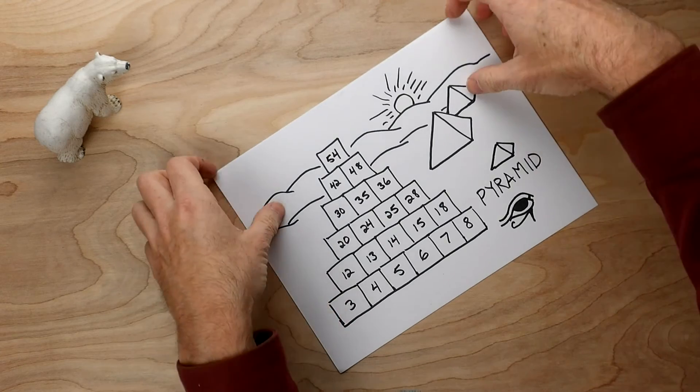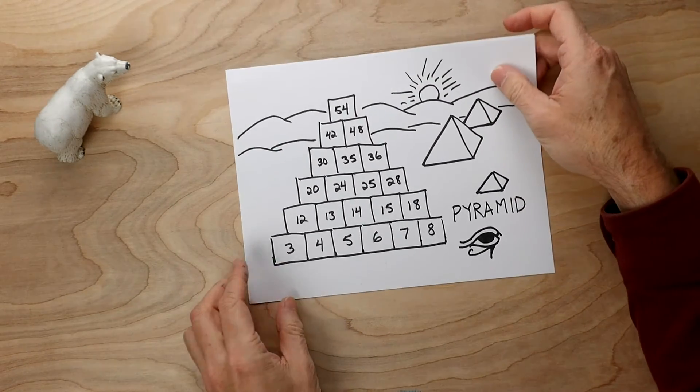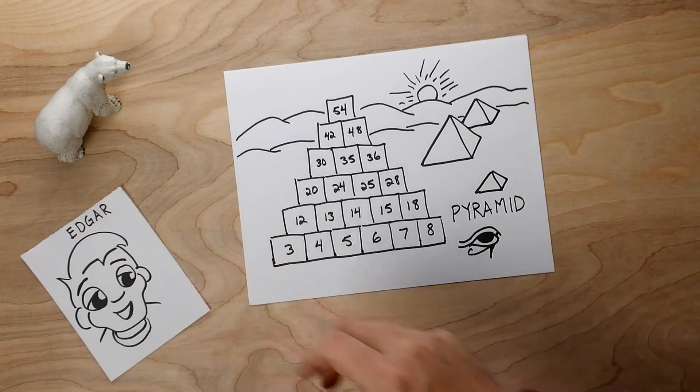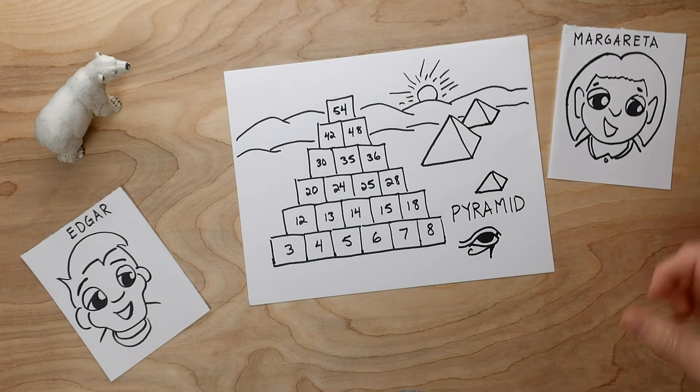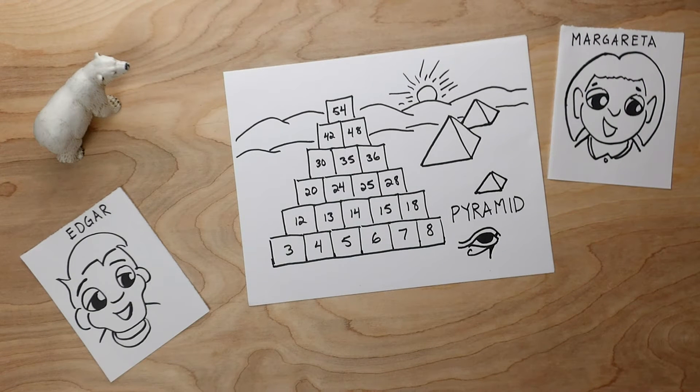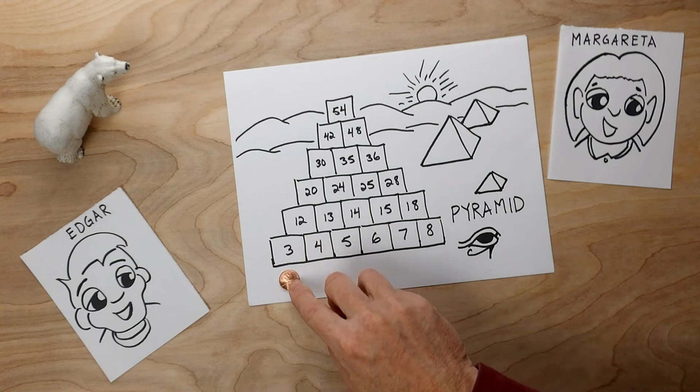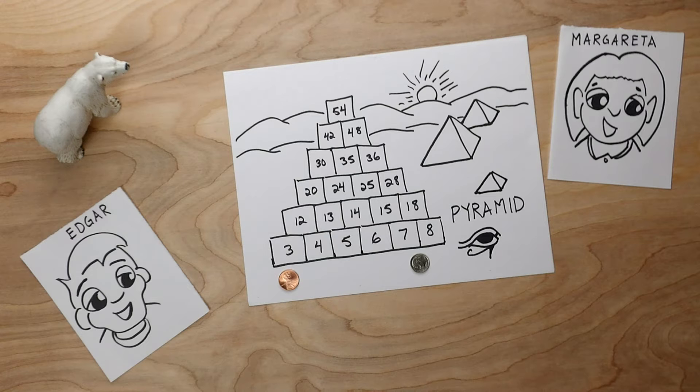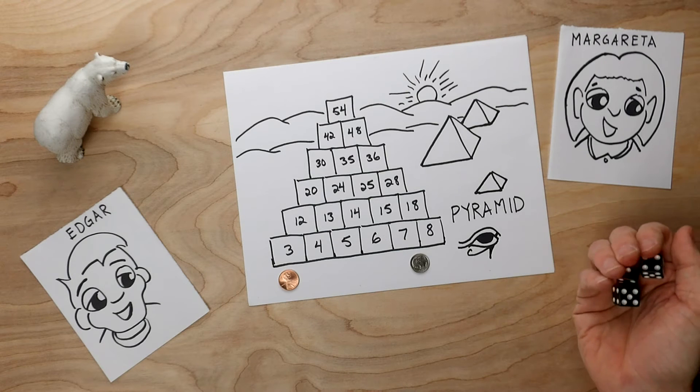Now let's play. What we need now is we'll need a couple players. And our players for day are Edgar and Margarita. In this game, Edgar will be copper, and Margarita will be silver. Edgar will go first. Edgar rolls the dice.